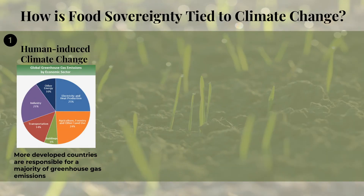Next, we will be discussing how food sovereignty is tied to climate change and how indigenous knowledge can help us address it. Climate change has been occurring because humans have been emitting greenhouse gases into the atmosphere. Emissions may come from the energy sector, transportation sector, and agricultural sector, and more. Developed countries in particular have been emitting lots of greenhouse gases through industrialized agriculture, which uses machinery and energy to maintain large-scale farms. The U.S. is one of the top emitting countries.